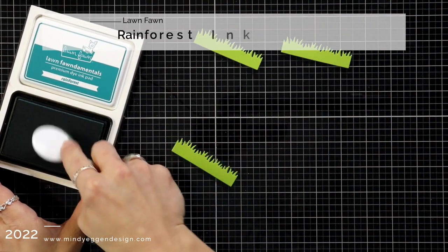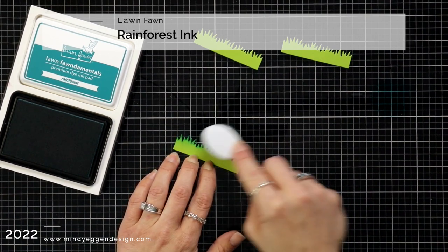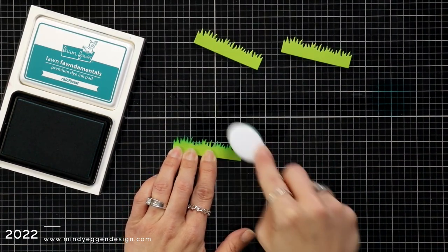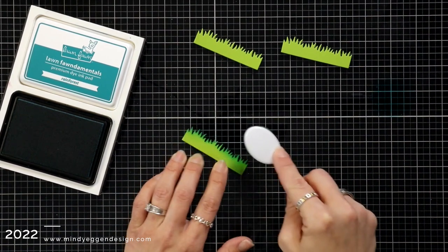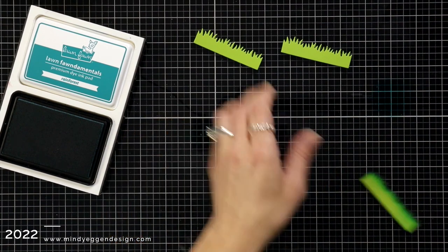Now I can move on to decorating some of the elements for the inside of my box, starting with these three pieces that I die cut out of cilantro cardstock.